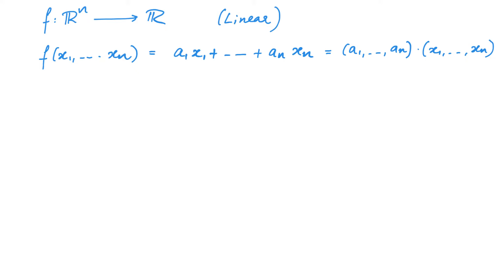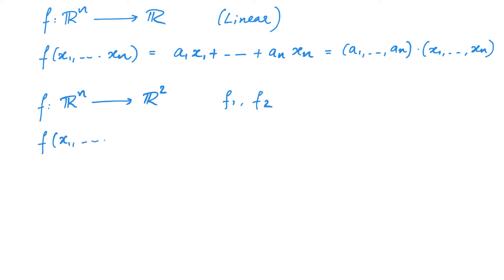That is, any linear map f can be represented as a dot product with some vector in Rⁿ. This is an interesting result in itself, but it has many other uses. For instance, it helps us understand functions f from Rⁿ to R². Given a function f from Rⁿ to R², we can express it in terms of two functions from Rⁿ to R. Let us call these functions f₁ and f₂, obtained by composition with projection to the first and second coordinates respectively.